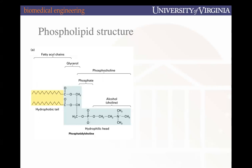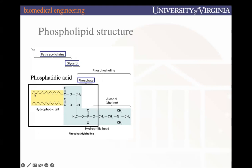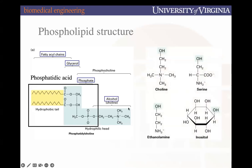Where it becomes more specific is the alcohol group. The three pieces general to each phospholipid together are called phosphatidic acid, and once you include the alcohol the naming becomes formulaic: phosphatidyl plus the name of the alcohol. We have four alcohol groups typically present — choline, serine, ethanolamine, and inositol — giving us names like phosphatidylcholine. The alcohol group defines the specificity of that phospholipid.